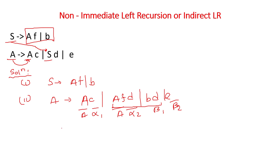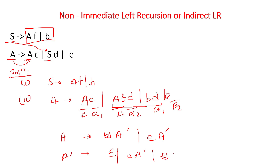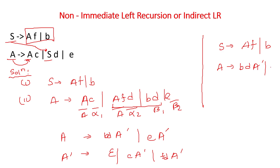Applying the immediate left recursion elimination format we already learned: A = BD A' | EA', and A' = epsilon | CA' | FDA'. So the final answers are: S = AFB, A = BDA' | EA', and A' = epsilon | CA' | FDA'.